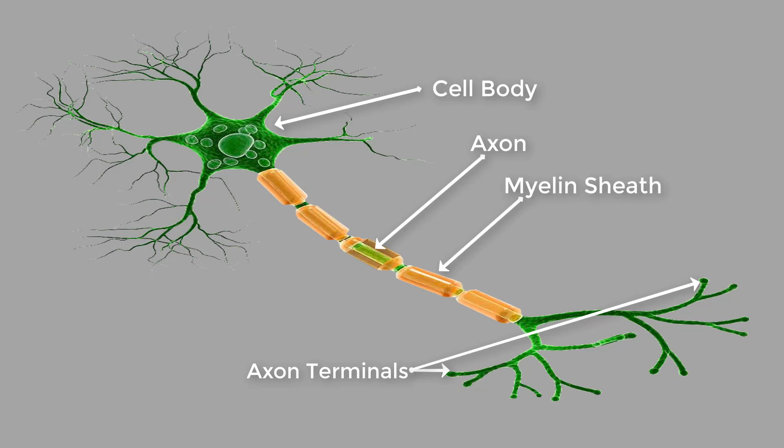The myelin sheath is a sheath made up of proteins and fatty acids. It helps with the transmission of electric impulses, causing them to occur quickly and efficiently. If this sheath is damaged, the transmission slows down. Dendrites extend from the cell body to receive messages from other neurons.